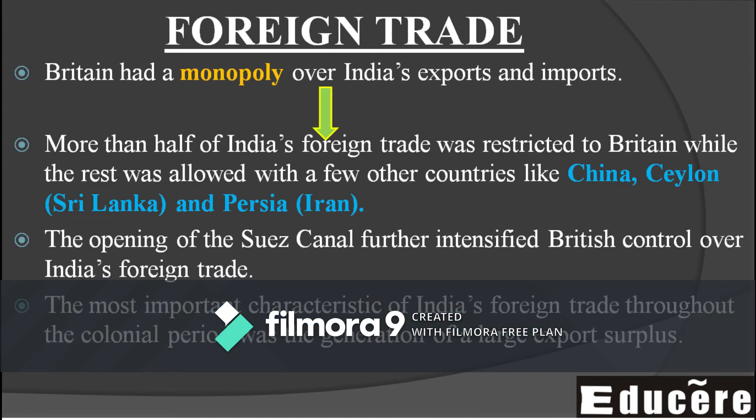In India's foreign trade, Britain had a monopoly — obviously, as we were a colony of Britain. Because of this, more than half of India's foreign trade was restricted to Britain only. Whether exports or imports, over 50% was with Britain. The rest involved countries like China, Ceylon (Sri Lanka), and Persia (Iran) — these were some countries with whom India traded at the time of British rule.